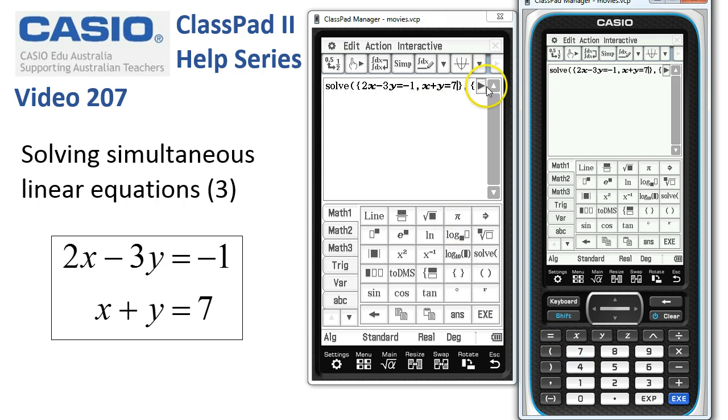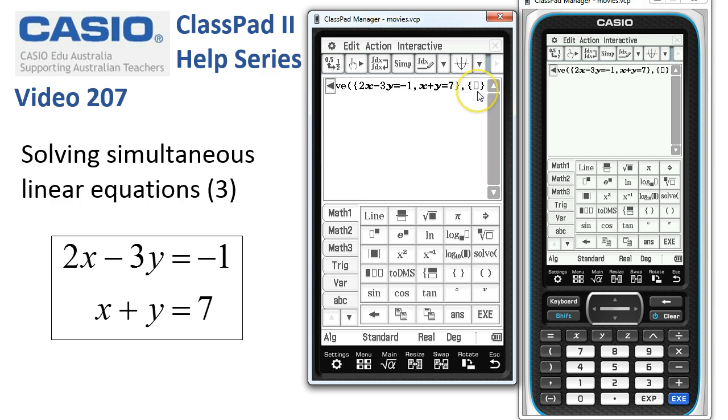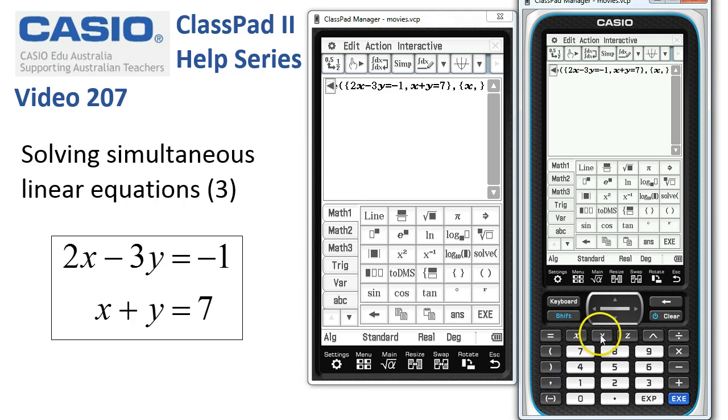Now, I then tap into the second list, and in this list, I tell ClassPad the variables that I'd like to solve for, which in this case is x, comma, y.